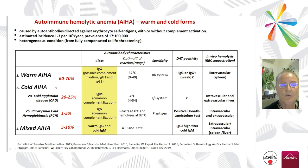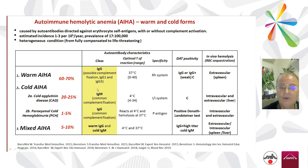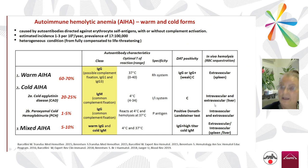The most important distinction is between warm and cold forms. Warm forms are the great majority, due to IgG that possibly fix complement, usually reacting at body temperature. The direct antiglobulin test is positive for IgG or weakly for complement, resulting in extravascular hemolysis in the spleen. Cold forms — 20–25% — are due to IgM, which fixes complement very well, reacting in the cold, with hemolysis that is intravascular and extravascular in the liver.